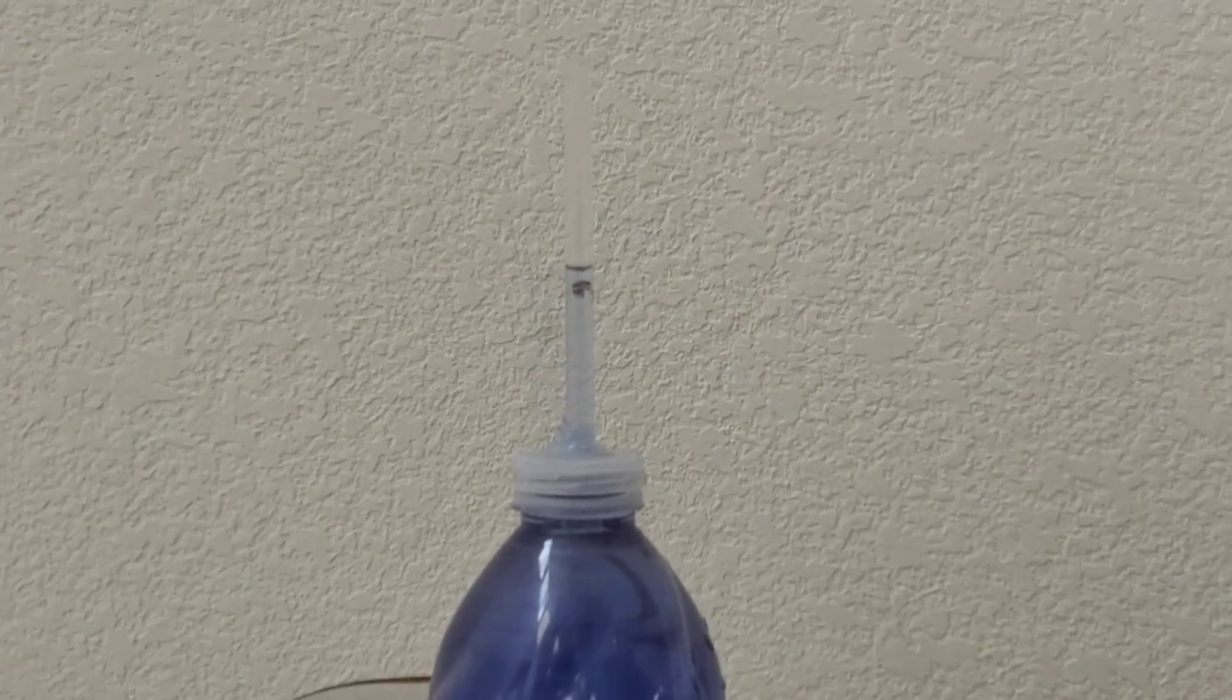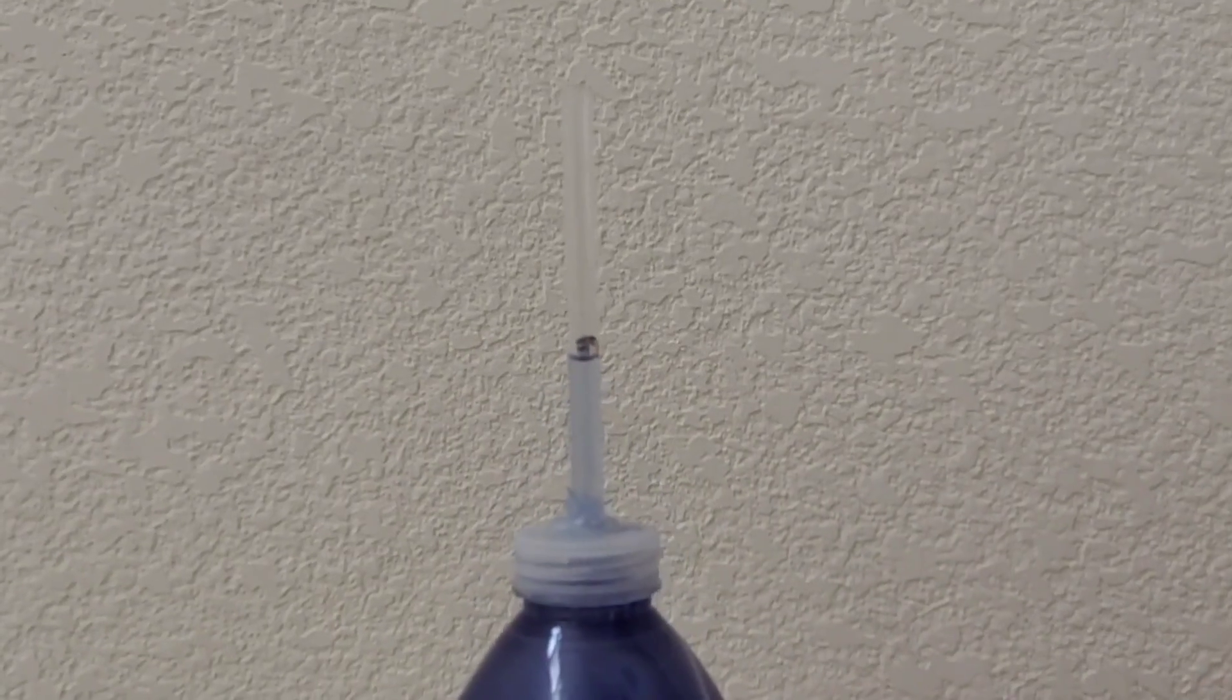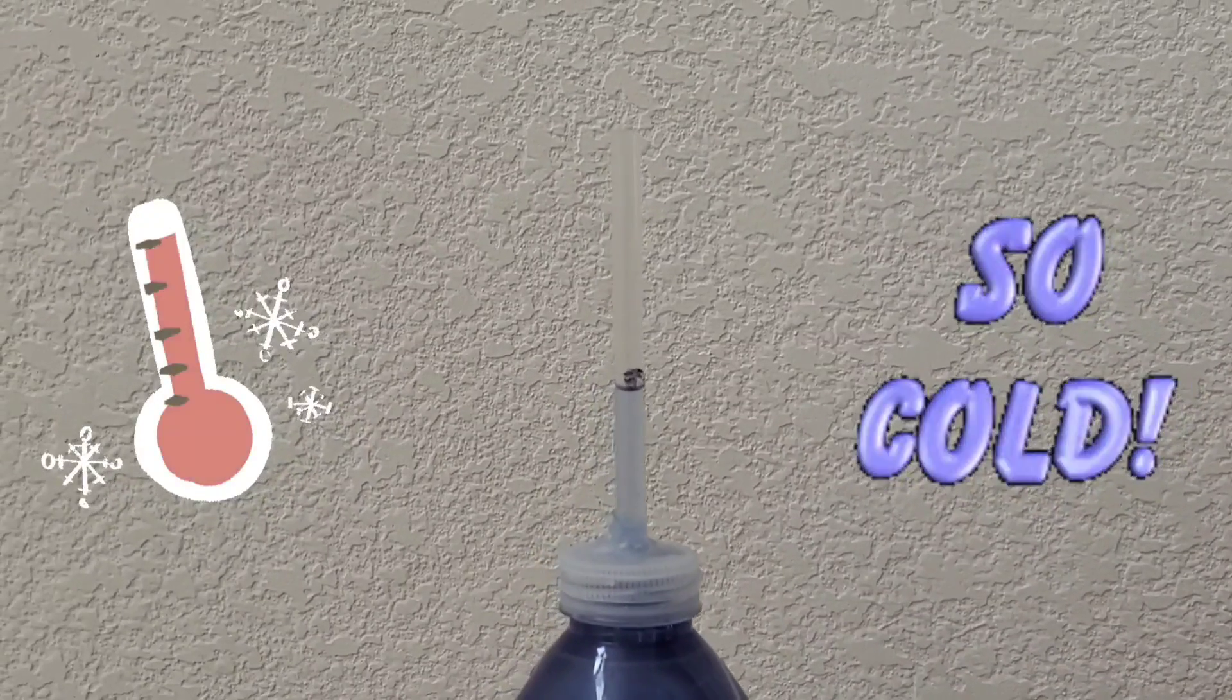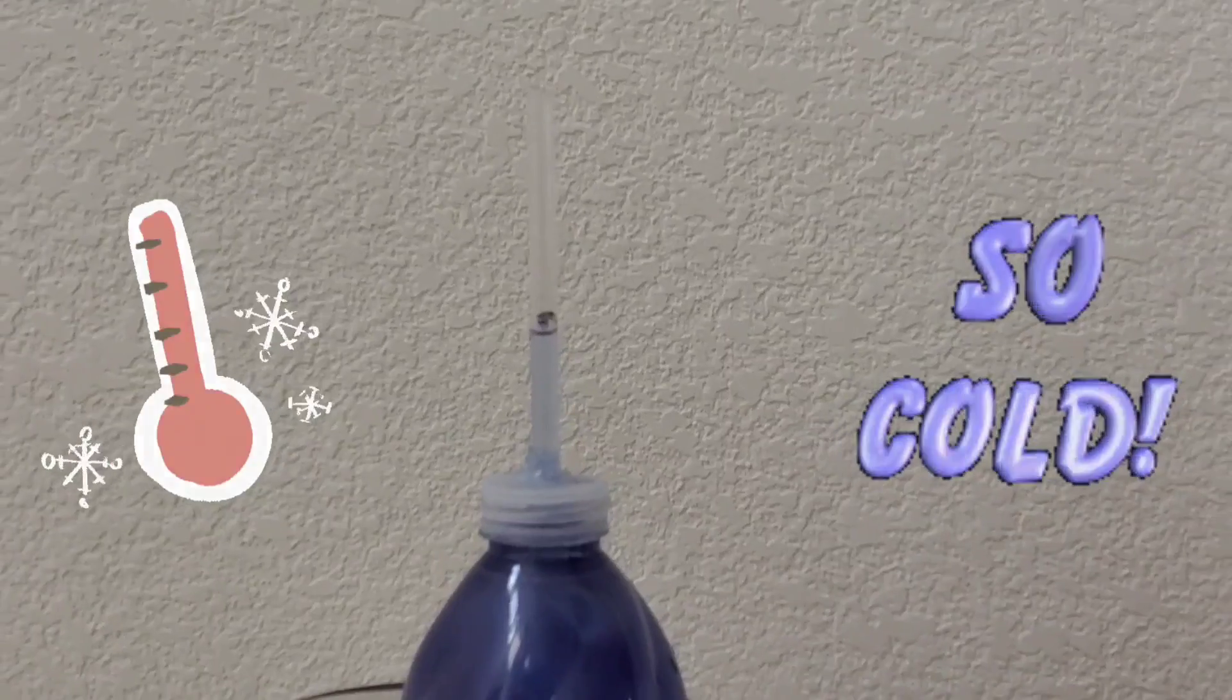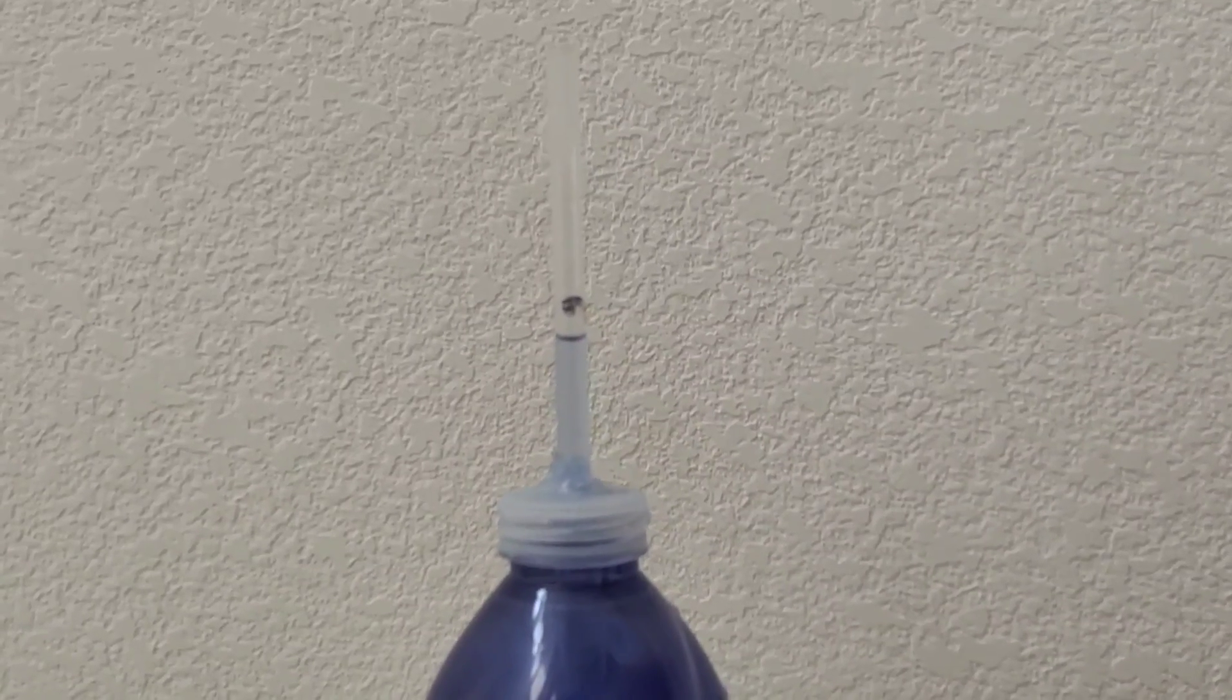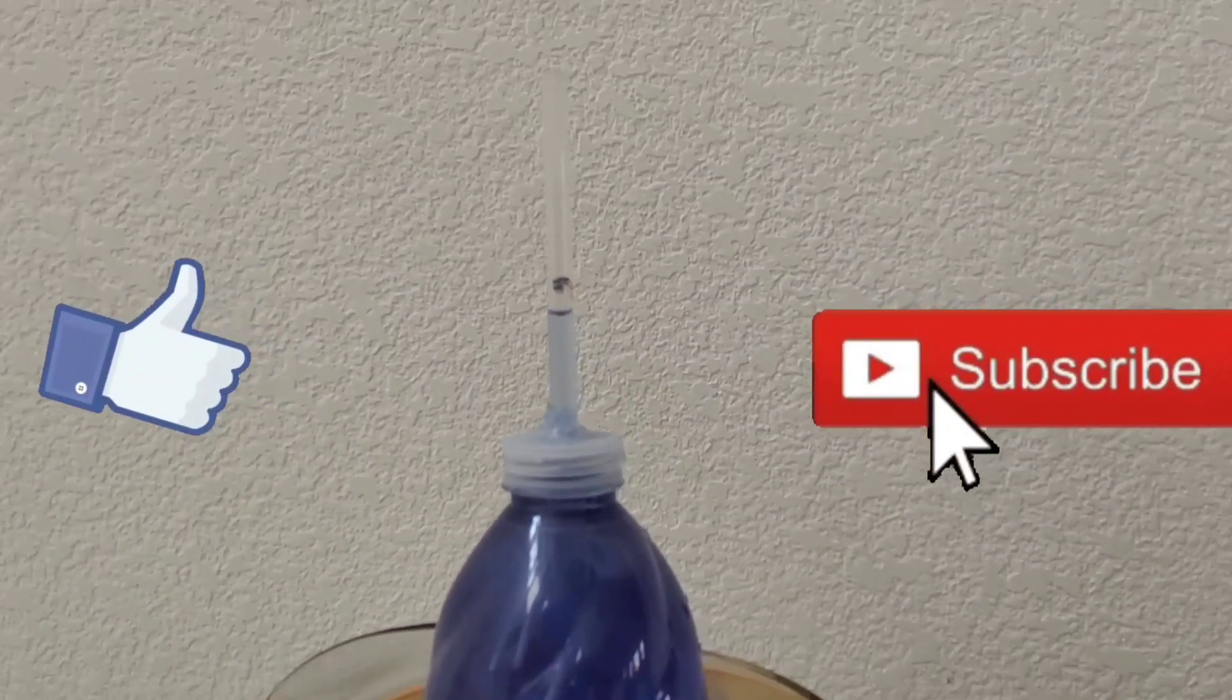And now when we put the cold water, let's see what happens. So see now it's going down. Because of the cold water, the level is going down and that's how a real thermometer works.